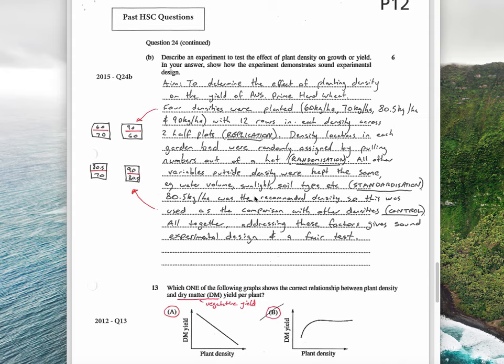All other variables outside density were kept the same - example: water volume, sunlight, salt type, etc. That's standardization. It's nice to put these things in here. Even though a marker might be able to find these things, if you can really clearly go "here's the standardization, here's the randomization," it makes it easy for you to get the marks. 80.5 kilos was the recommended density, so it was used as the comparison with other densities - in other words, the control. Addressing these factors gives sound experimental design and a fair test. If you don't address all four aspects, you cannot get six marks.